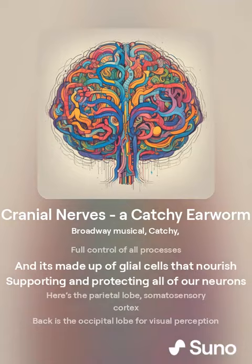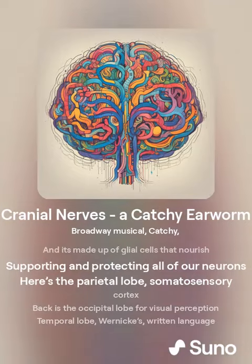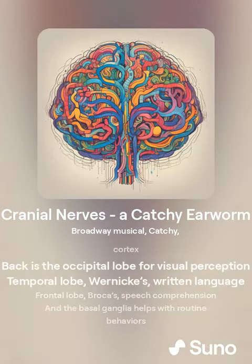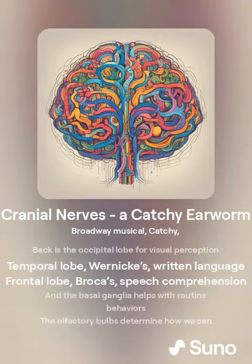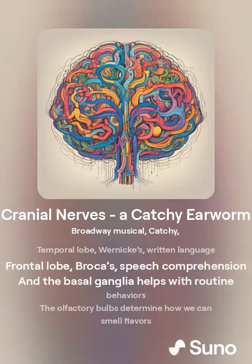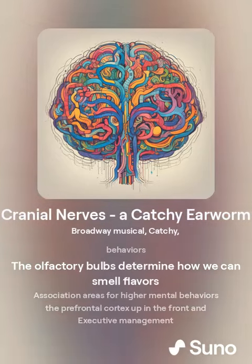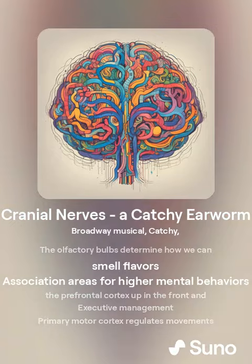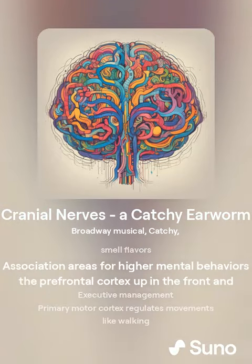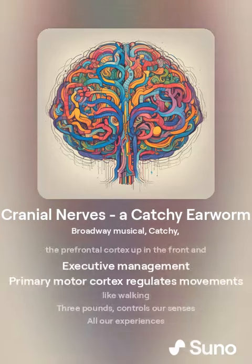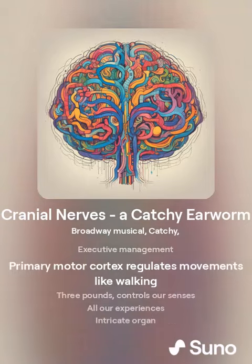The outer cerebral cortex is a full-control neuron layer. It's made up of glial cells that nourish, support, and protect all of our neurons. The parietal lobe houses the sensory cortex. The occipital lobe handles visual perception. The temporal lobe contains Wernicke's area for language. The frontal lobe contains Broca's area for speech comprehension. The basal ganglia helps with routine behaviors, and the olfactory bulb determines how we smell flavors.